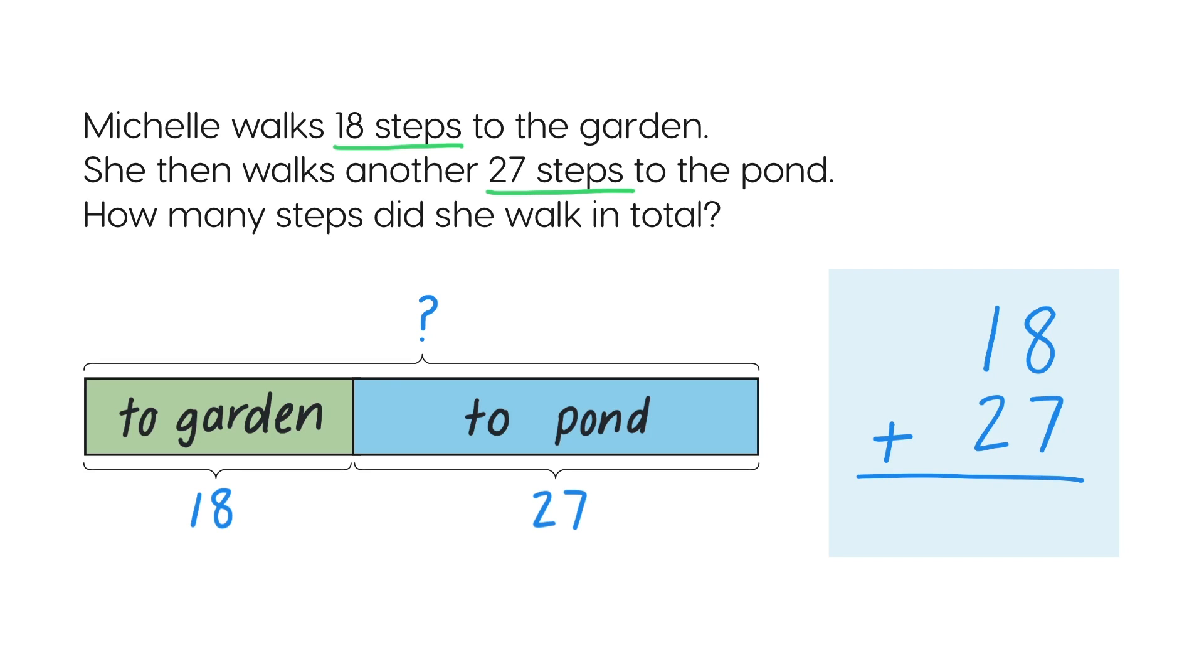Start with the ones. Eight ones, add seven ones, is 15 ones. Regroup 15 ones as one ten and five ones.